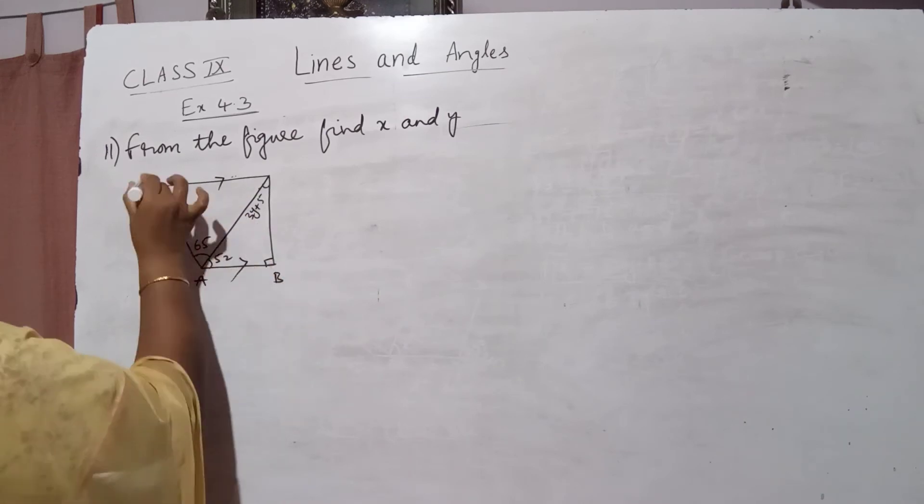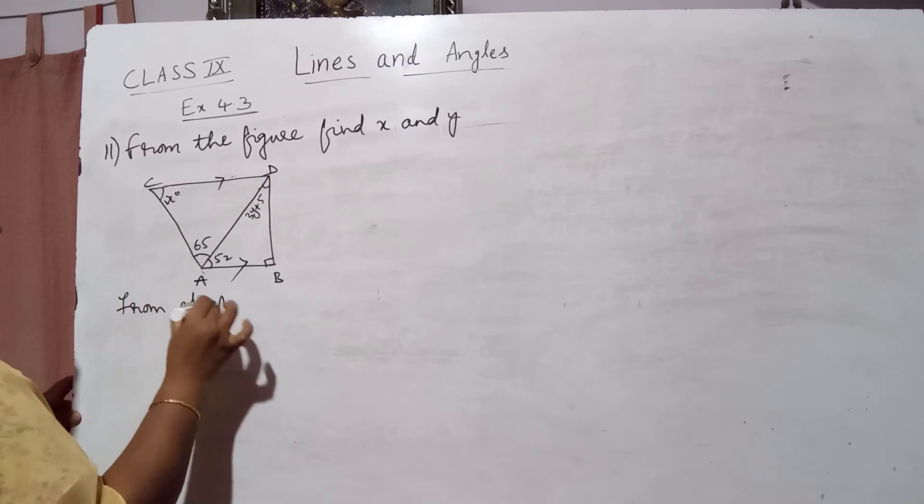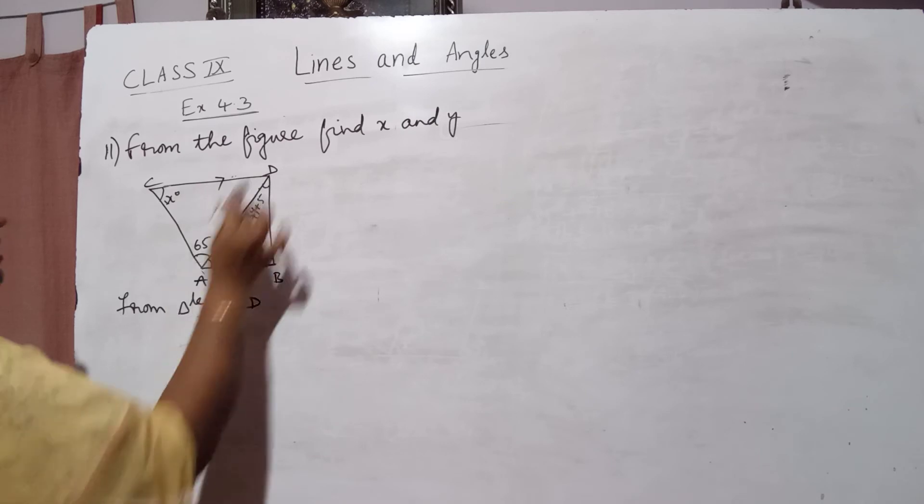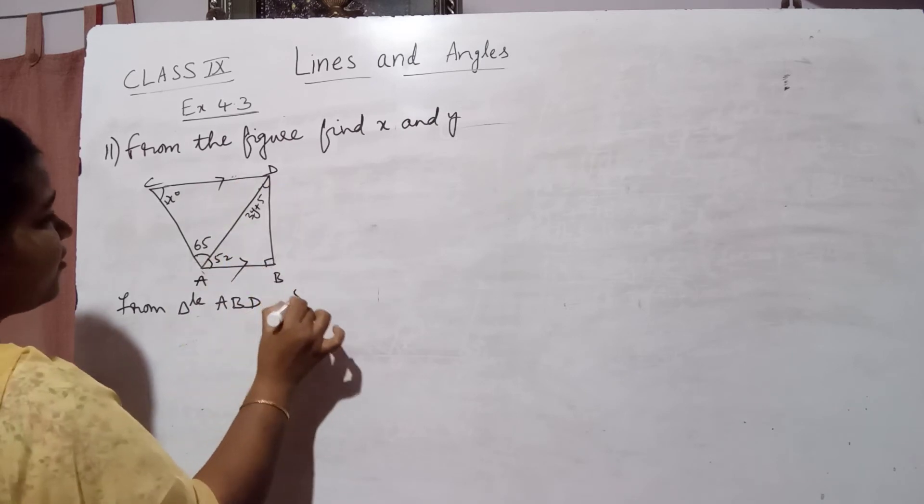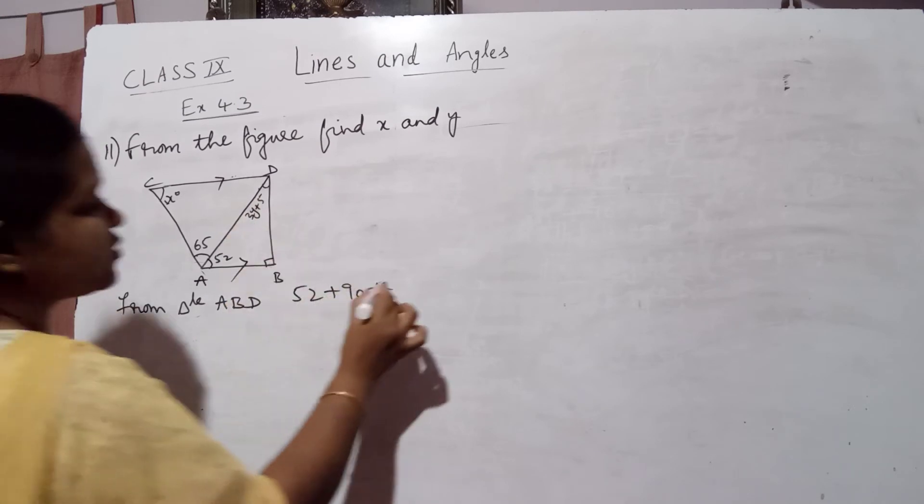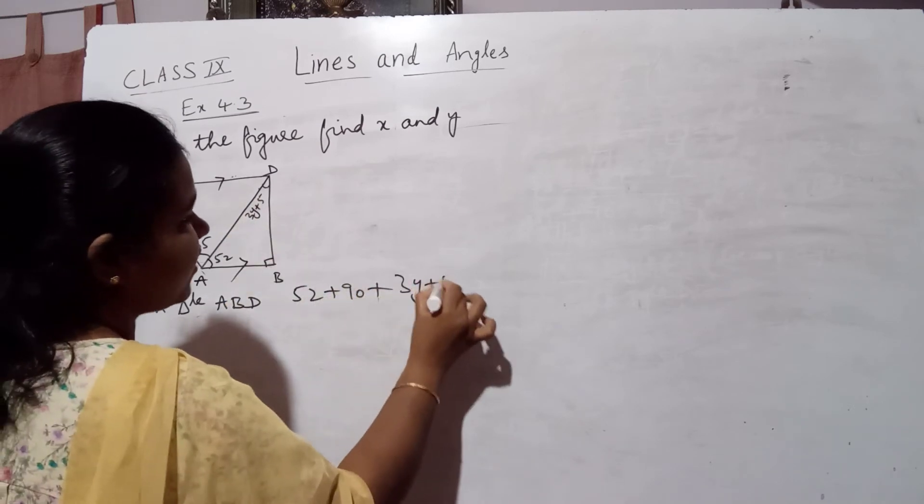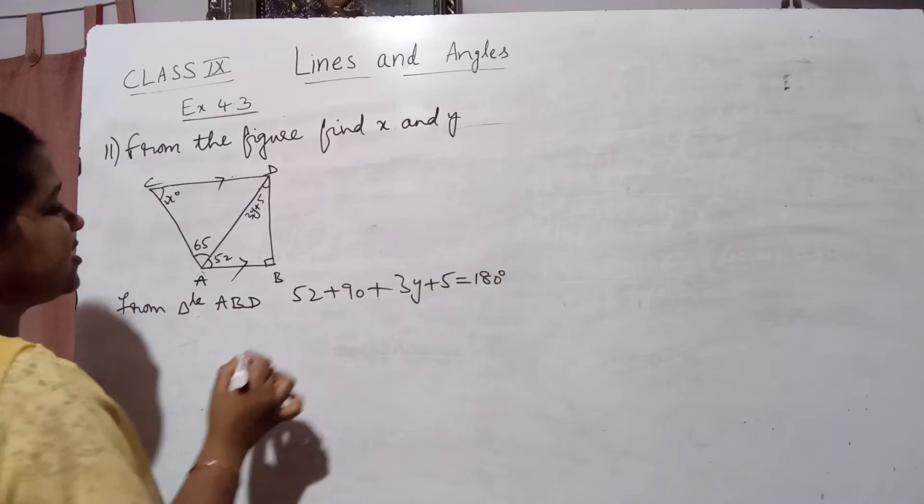Let us mark this as ABCD. So from triangle ABD, you take this triangle. Here it is given as 90 degrees, so what you can write: 52 plus 90 plus this is 3y plus 5, 3y plus 5 is equal to 180 degrees, because we know the sum of the angles in a triangle is 180 degrees.